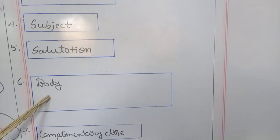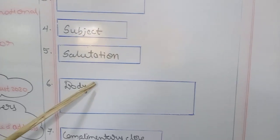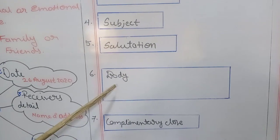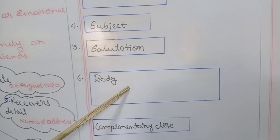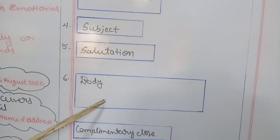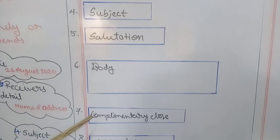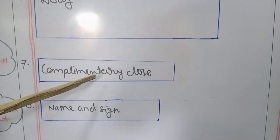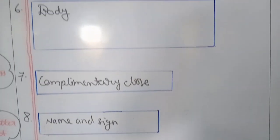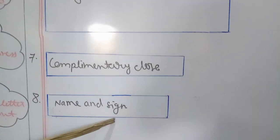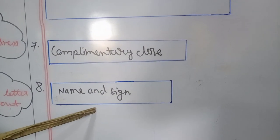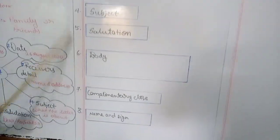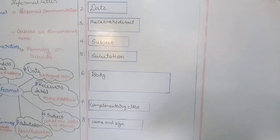After that, body of the letter — body means actual message, bifurcated into three parts. In the first paragraph we write the introduction and purpose of the letter. In the second paragraph, detailed information about our letter. And at the last we conclude our letter. After that, complimentary close — like 'Thanking you, yours faithfully' or 'yours sincerely.' And at the last, name and sign of the person writing the letter, and if applicable, the designation. This is the format of the formal letter.